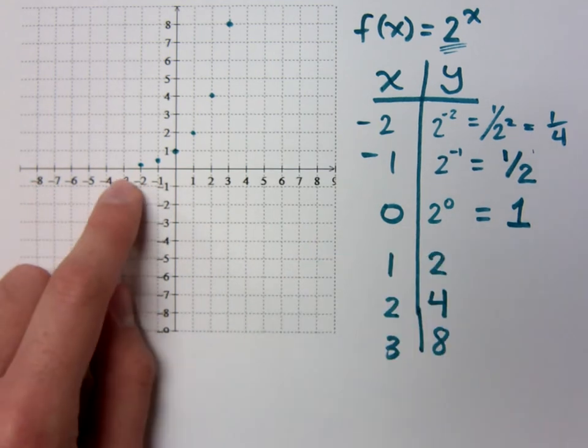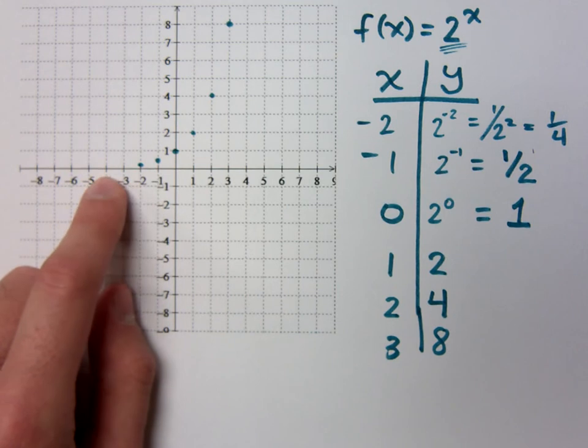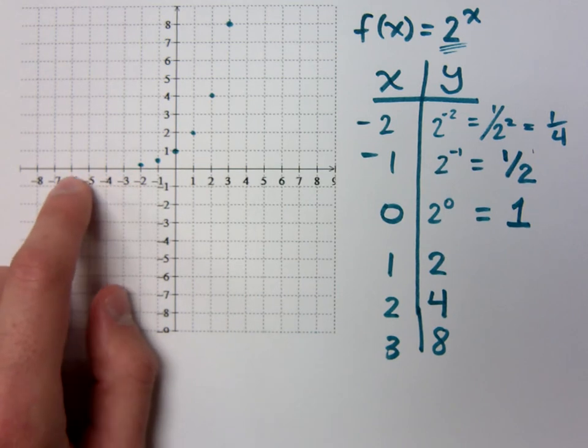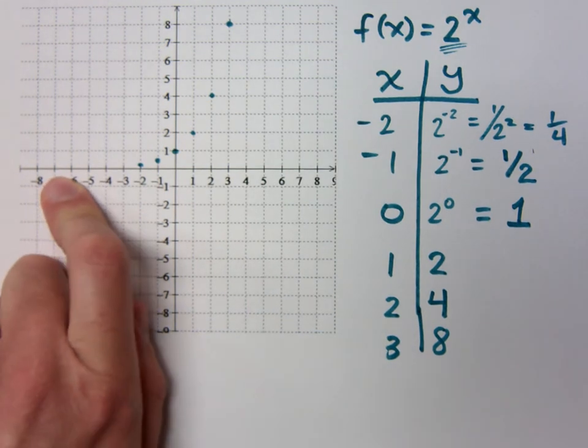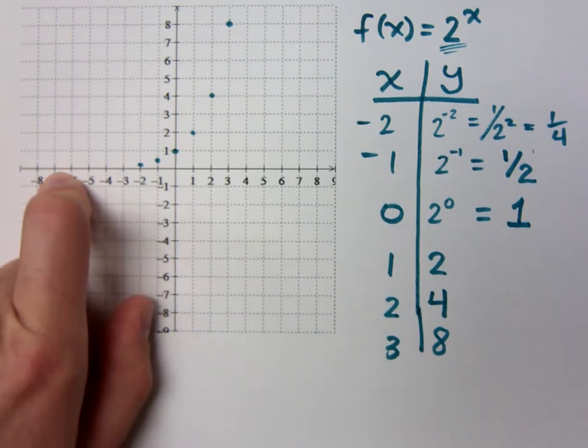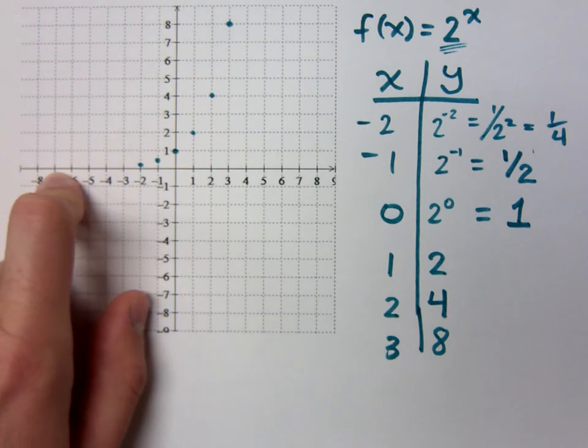To the x axis. So if I keep going, like negative 3, I'd get 1 eighth, 1 16th, 1 32nd, 1 64th, 1 128th. I'm getting closer and closer and closer to 0. Will I get there? No.